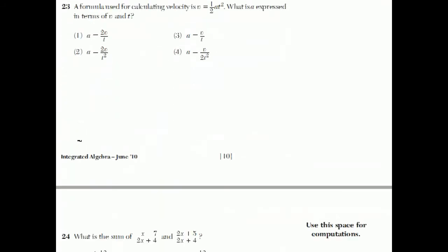Question 23. A formula used for calculating velocity is v equals one-half at squared. What does a express in terms of v and t? Well, this is kind of like an algebra problem, but instead of having numbers, there's mostly variables. So, v equals one-half at squared. And they want to get the a isolated. Well, the way you get this a isolated is first, if you multiply both sides by 2, then these cancel out.